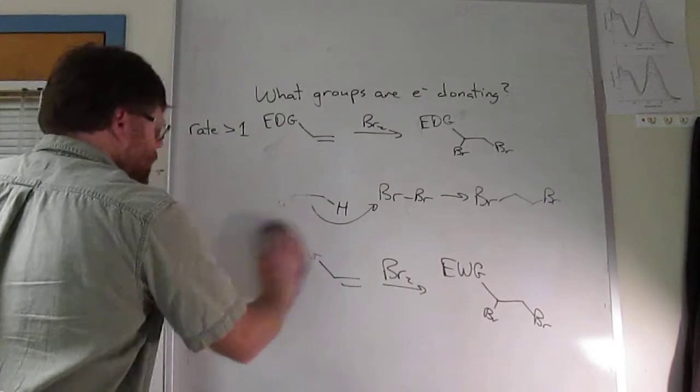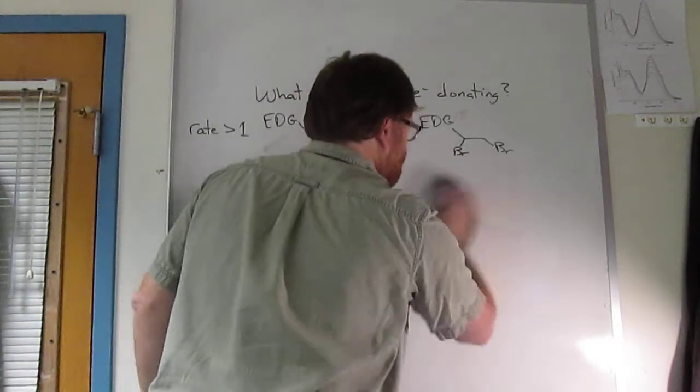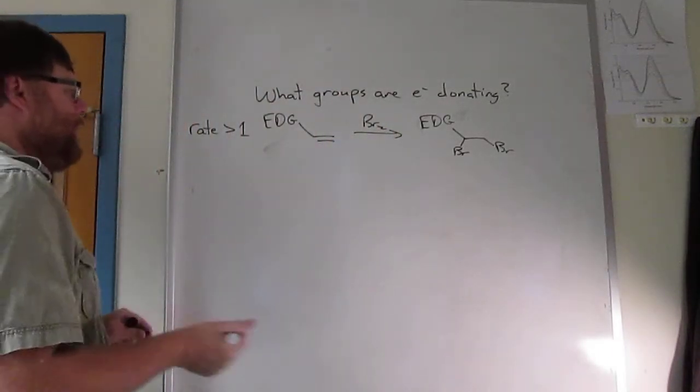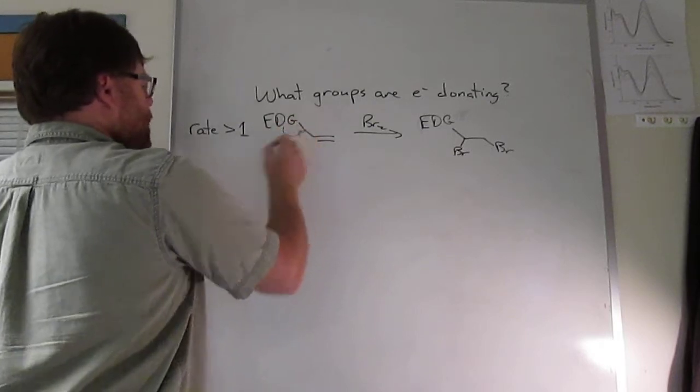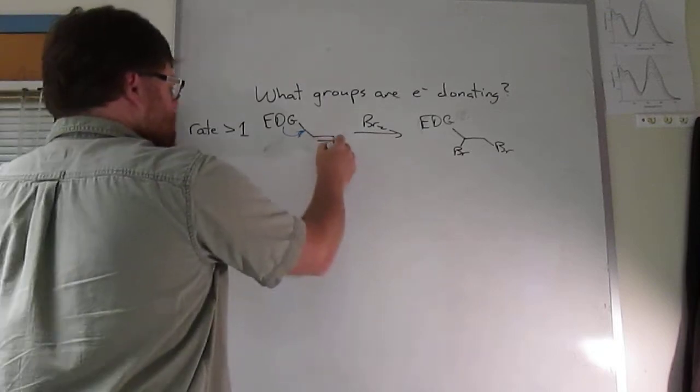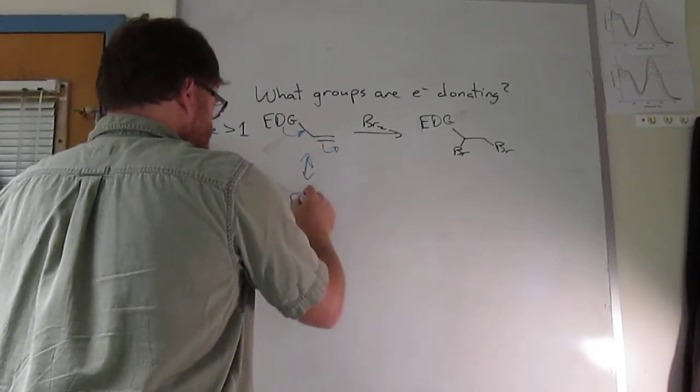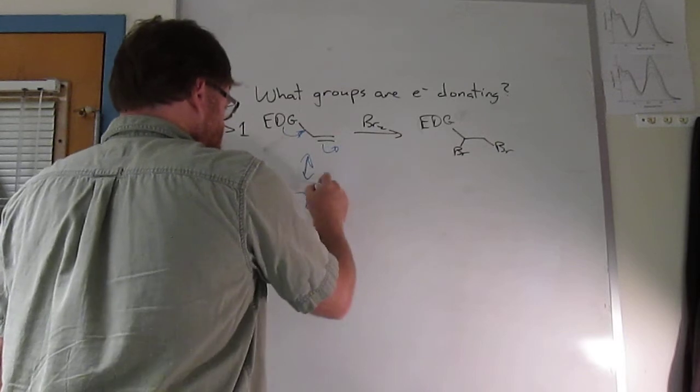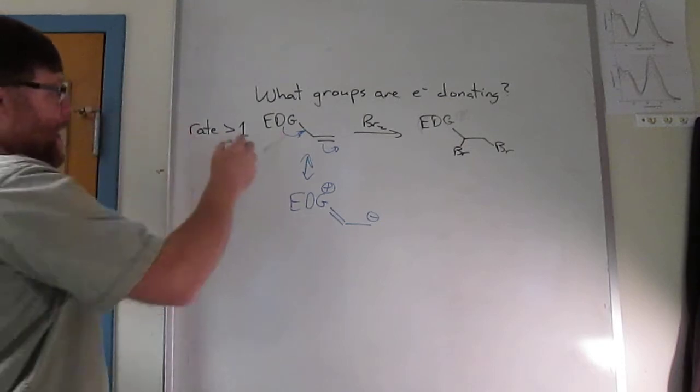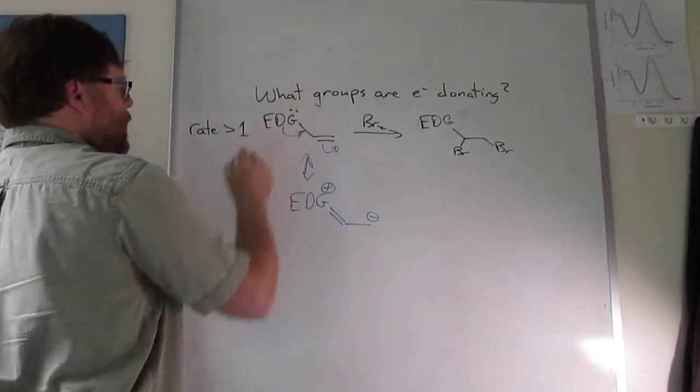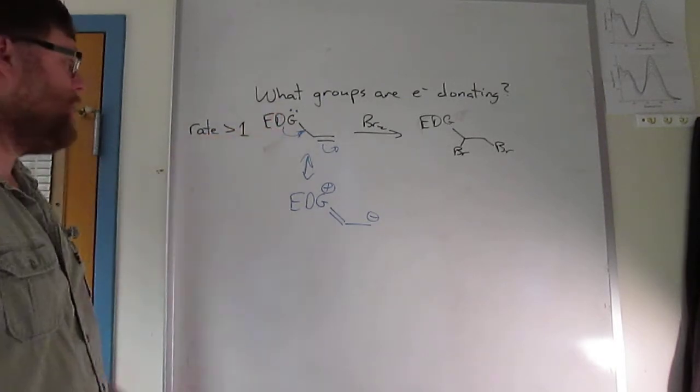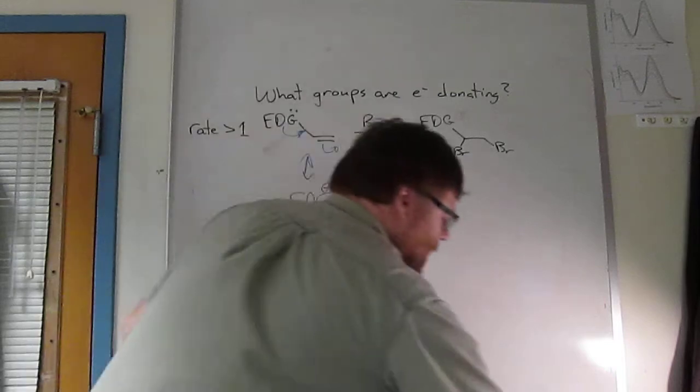So let's look at what groups might be electron donating. We're wanting to push electron density in so that you get a resonance structure. Clearly, anything with a lone pair here, any group that has a lone pair on it and doesn't have a positive charge will donate electrons.